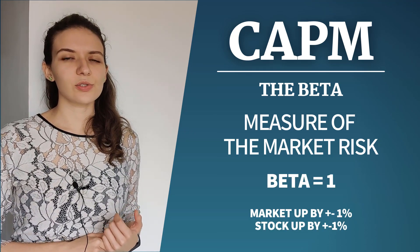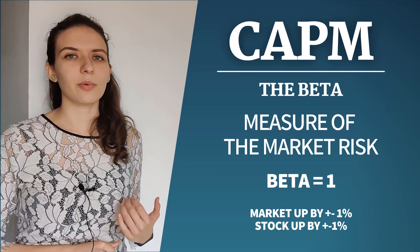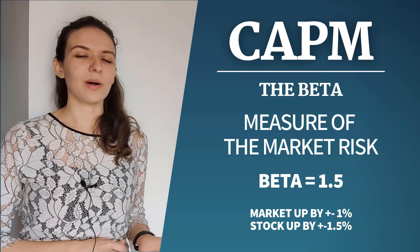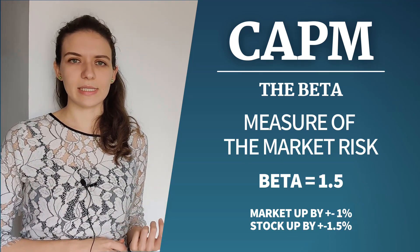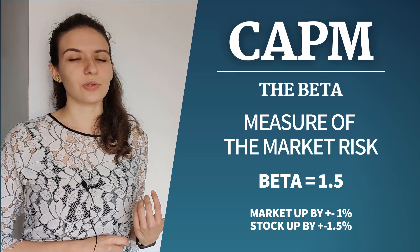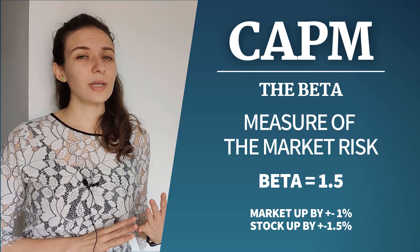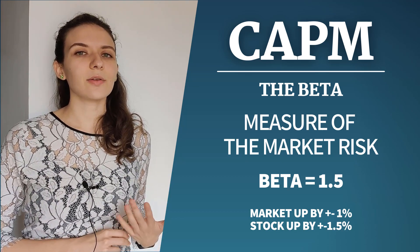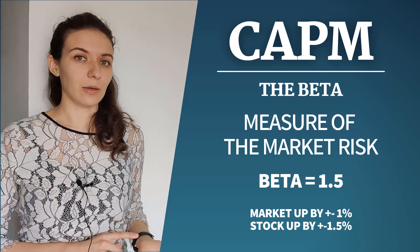A beta of 1 means that the stock moves exactly like the market in both directions. A beta greater than 1 shows that the stock moves more aggressively with respect to the market. So it gives you more upside potential when markets are in bullish territory, but it also carries a higher risk of losing money in a market downturn.